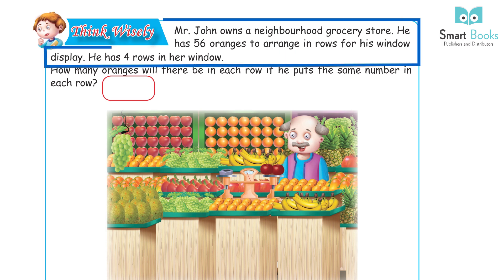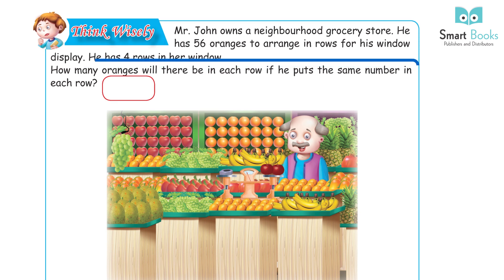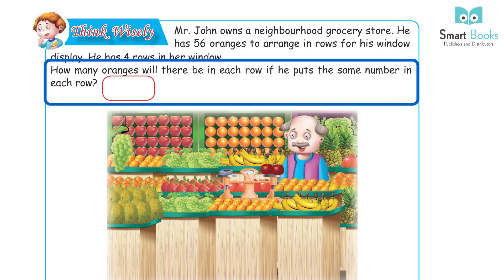Think wisely: Mr. John owns a neighborhood grocery store. He has 56 oranges to arrange in rows for his window display. He has 4 rows in a window. How many oranges will there be in each row if he puts the same number in each row?